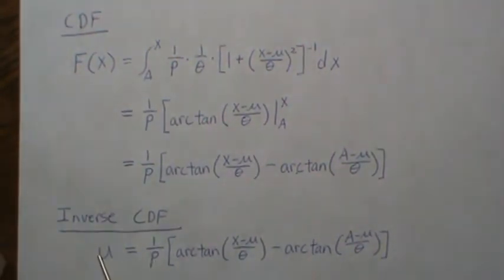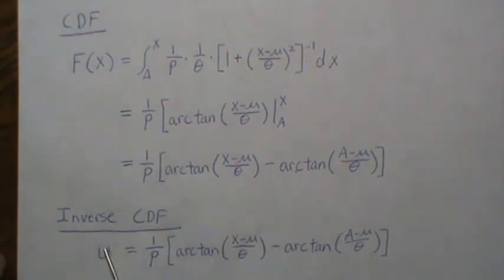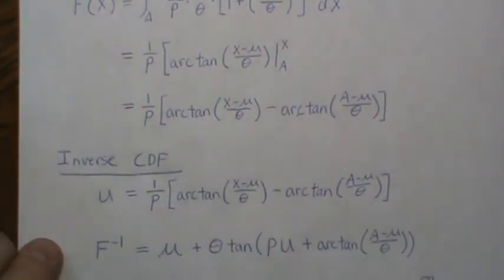So here, we would need to multiply by P, add the arctangent over, take the tangent of both sides, multiply by theta, add mu, and that's what we get here. Okay, so now,